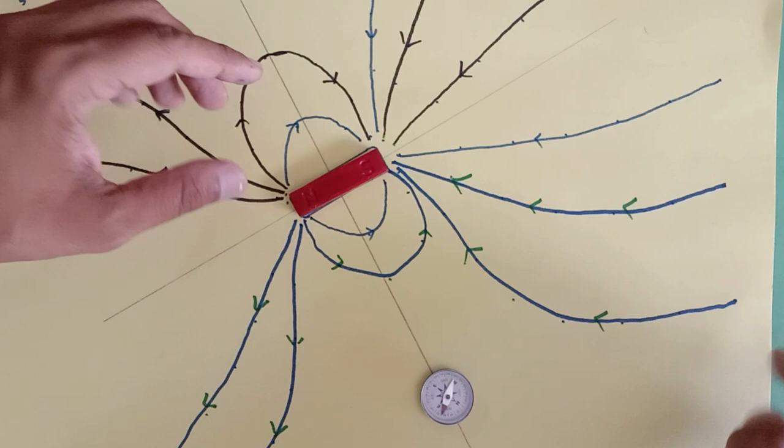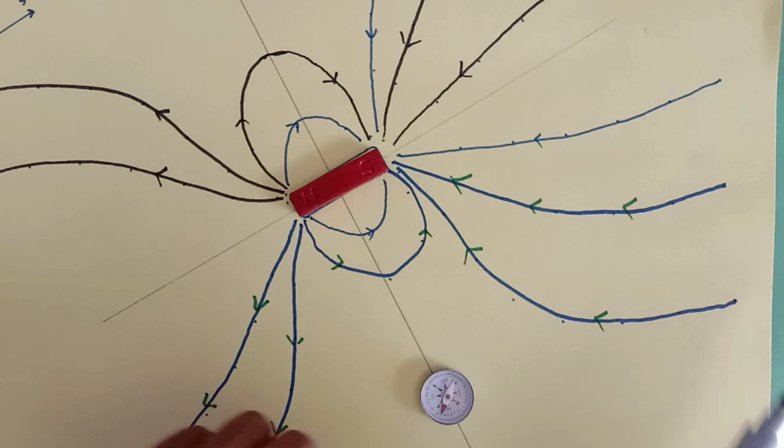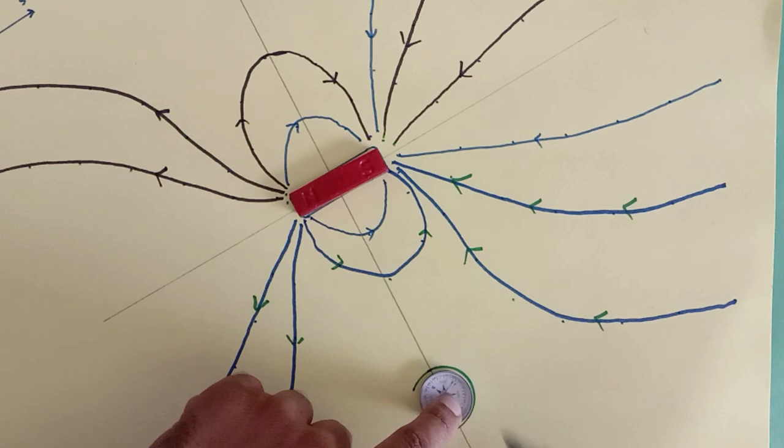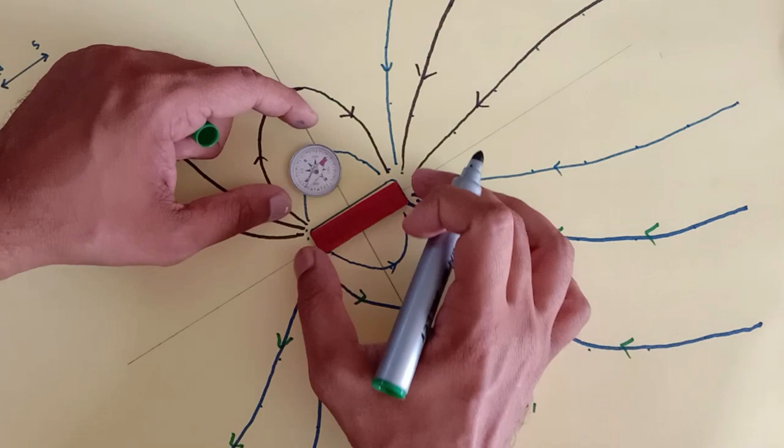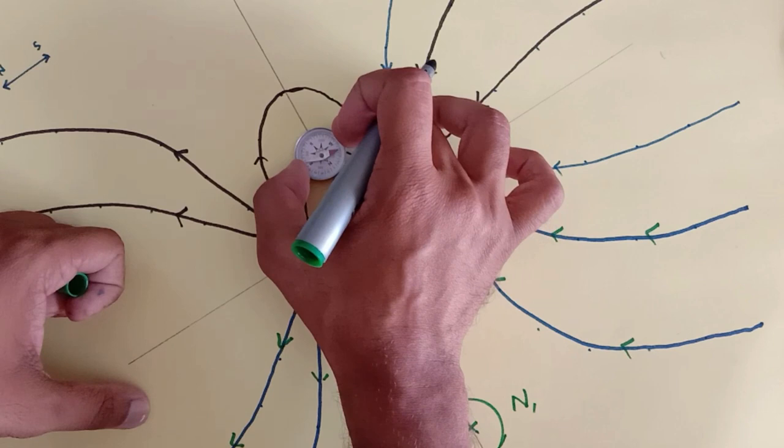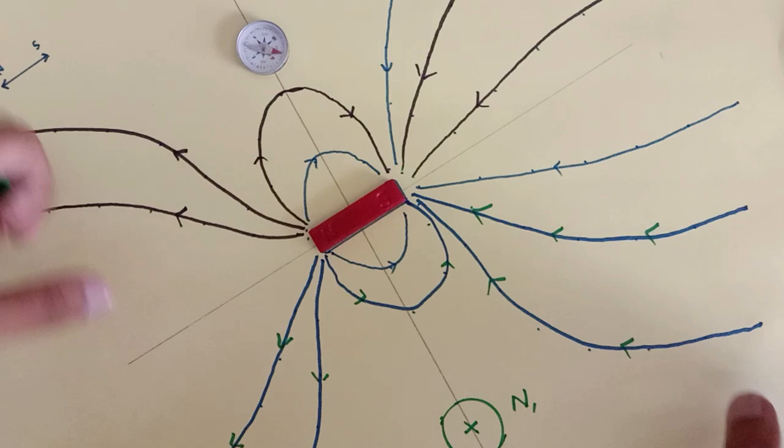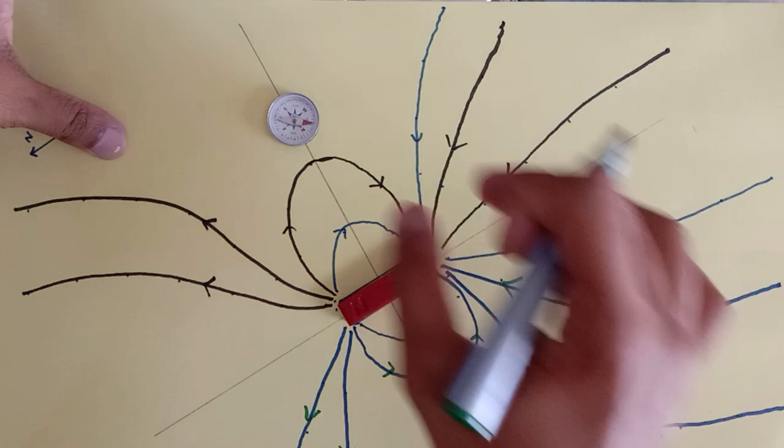This is our neutral point N1. Now the same thing goes over here also. You have to gently move this. Let me show you this very carefully. Here we have obtained our second neutral point as well.